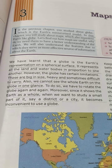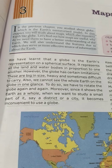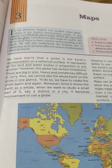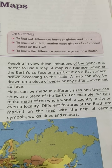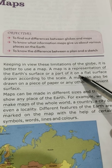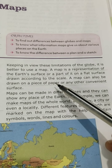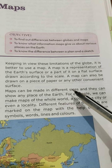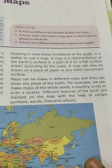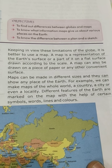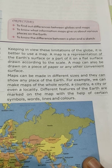To see the whole earth, we have to rotate the globe again and again. Moreover, since it shows the earth as a whole, when we want to study a small part of it — say a district or a city — it becomes inconvenient to use a globe. Keeping in view these limitations, it is better to use a map. A map is a representation of the earth's surface or a part of it on a flat surface, drawn according to scale. A map can be drawn on a piece of paper or any other convenient surface and can show any place on earth — for example, the whole world, a country, a city, or even a locality.